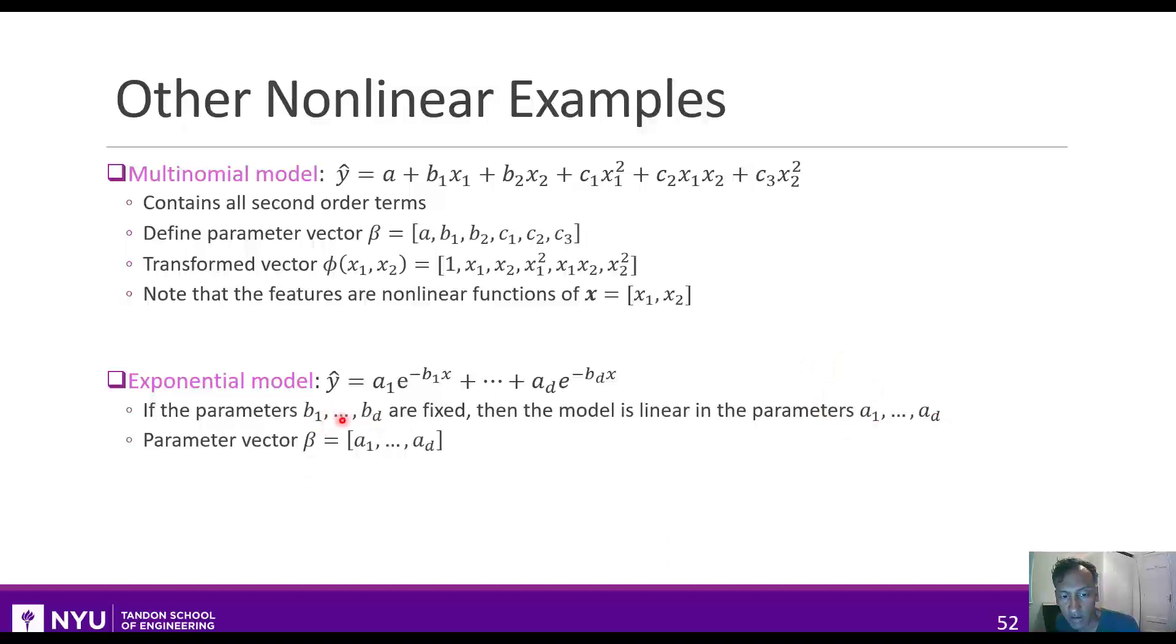In this case, since the b1s to bds are fixed, we would define our parameters just with the a coefficients. And we let our transformed vector have all the exponentials. This is okay as long as the b1s to bds are known, because then you can compute phi of x from that data. If the b1s to bds are not fixed, then the model is nonlinear in these parameters. And you can't use the transformed linear method like I've shown here, or at least not directly.